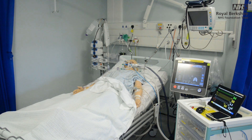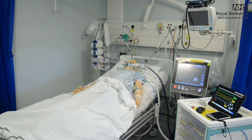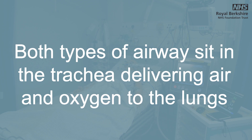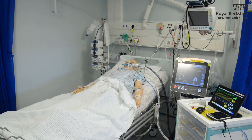A tracheostomy may be formed when patients are likely to have a prolonged period of mechanical ventilation — this will be a planned procedure. Both airways sit in the trachea, delivering mixed air and oxygen directly to the lungs. Both tubes will have an inflatable cuff near the end of the tube, providing a seal so air cannot escape around it, and offering some protection from aspiration of gastric contents into the lungs.